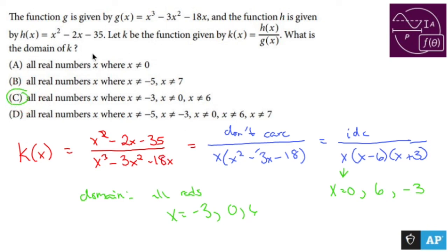If we're asked to find the domain, the domain is everything except the numbers that make our function undefined. The numbers that make our function undefined are those that make the denominator zero.